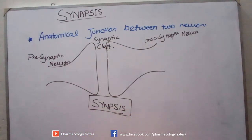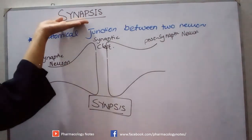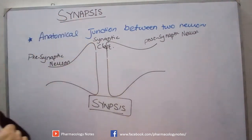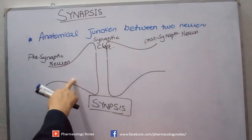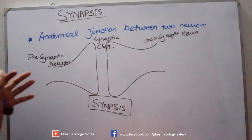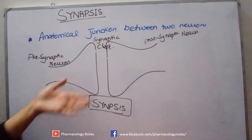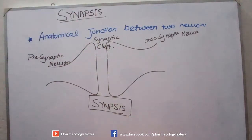Why are synapses so important? Because they are responsible for communication between neurons, and these synapses cause synchronization among neurons. If one neuron is activated and the next needs to be activated, then synchronization is also very important for the eventual effect, and this synchronization is possible because of synapses.